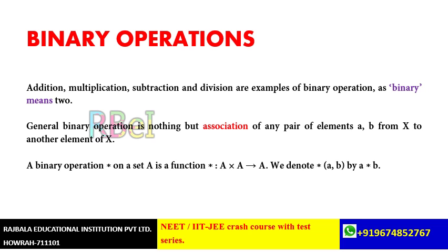Besides closure, we also have commutativity — a into b is equal to b into a in the case of binary operation. Associativity is also there, and distributiveness: a into (b and c) equals a into b and a into c, and similarly b and c into a. So distributivity, associativity, and commutativity are all properties of binary operations.